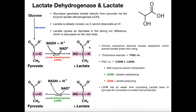So if lactate is formed, then where does the hydrogen ion come from? Well, it turns out it doesn't directly come from lactate — it comes from another process. That's because lactate is already ionized, so it can't dissociate a hydrogen. There's no hydrogen on this oxygen to dissociate. So that hydrogen ion has to come from another source.